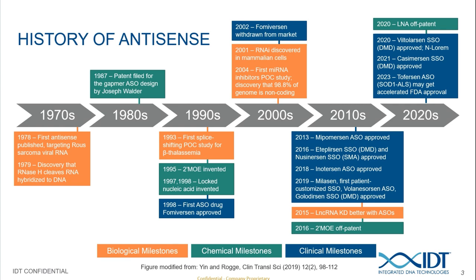Antisense oligos have been around for a long time, with the first mechanism of action study published in the late 70s targeting the Rous sarcoma virus. In 1987, the first patent was filed for the gapmer design by IDT's founder Joseph Walder. In the 90s, key chemical modifications were developed, such as the 2'-MOE and the locked nucleic acid. It was also then that the first ASO drug was FDA approved, only to be retracted shortly after in 2002.